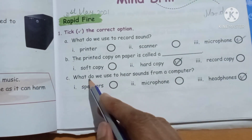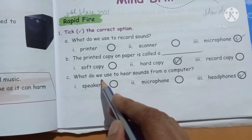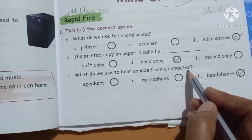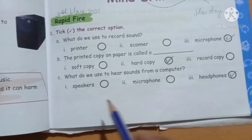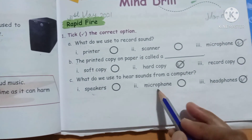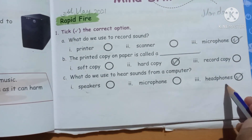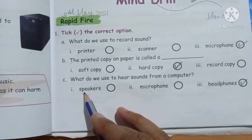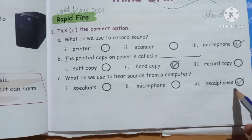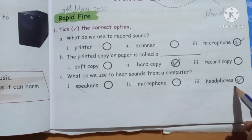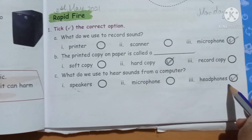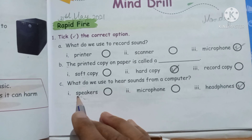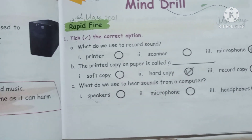Part C: what do we use to hear sounds from a computer? Options are speakers, microphone, headphones. Here two options apply — speakers and headphones. Both we use to hear sounds from the computer, but we take here headphones, because with speakers we disturb others.